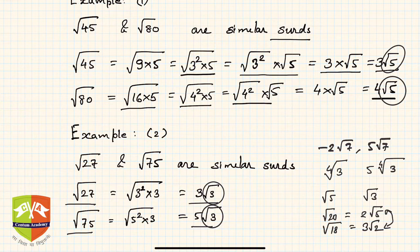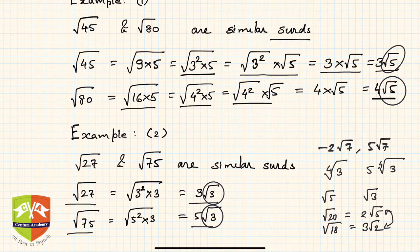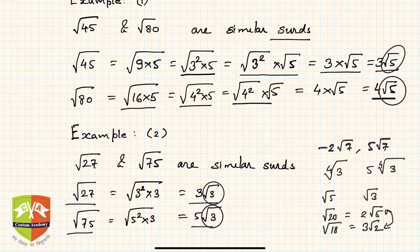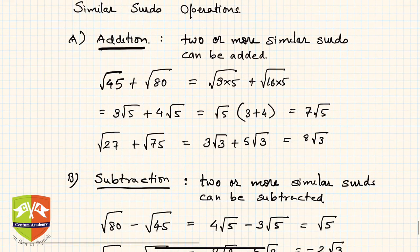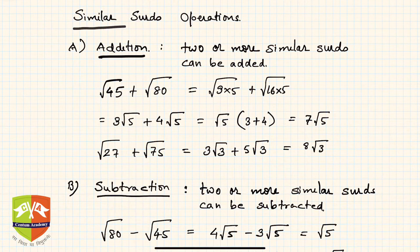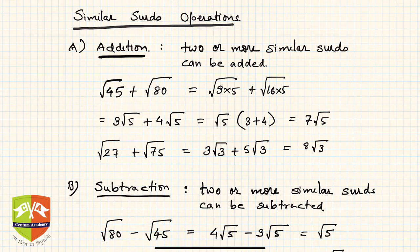The importance of finding similarity is that only similar SIRDs can be added or subtracted. Dissimilar SIRDs can be multiplied and divided, but for addition and subtraction — which will be important later, as many students make mistakes here — only similar SIRDs can be added and subtracted. Any type of SIRDs can be multiplied and divided, except during division you must ensure you are not dividing by zero.